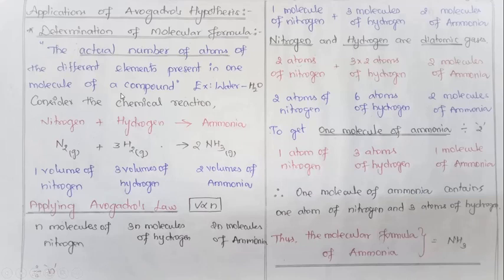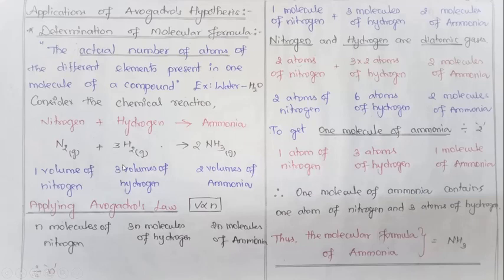Now, how to determine this molecular formula using Avogadro's hypothesis. Let us consider the chemical reaction: nitrogen reacts with hydrogen to give ammonia. N2, which is a gas, reacts with hydrogen, which is a gas, to give ammonia — it is also a gas. Avogadro's hypothesis is mainly applicable for gases, remember. According to this equation, one volume of nitrogen reacts with three volumes of hydrogen to give two volumes of ammonia.